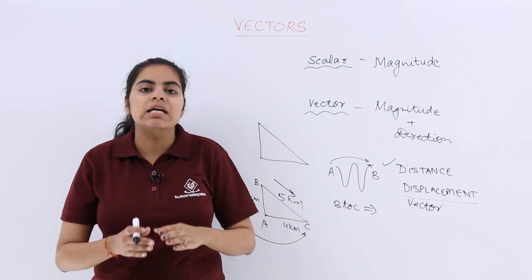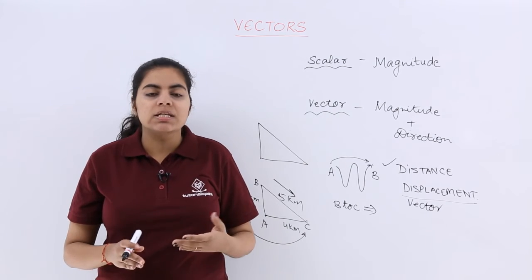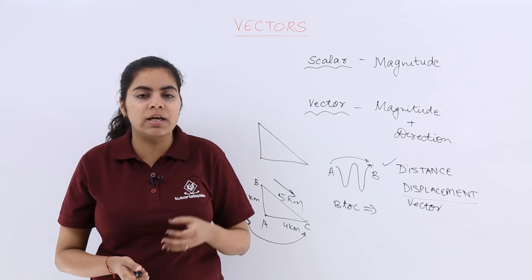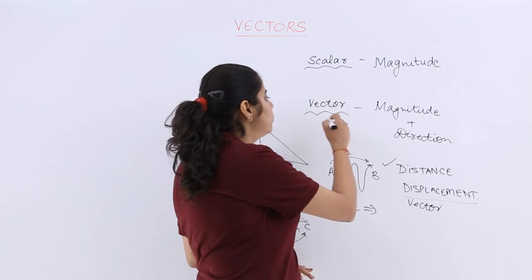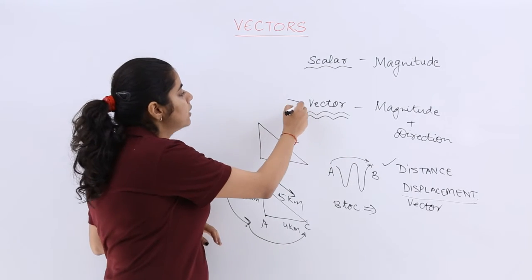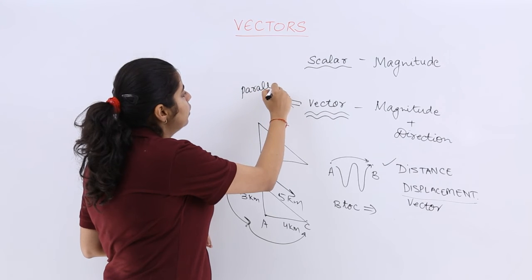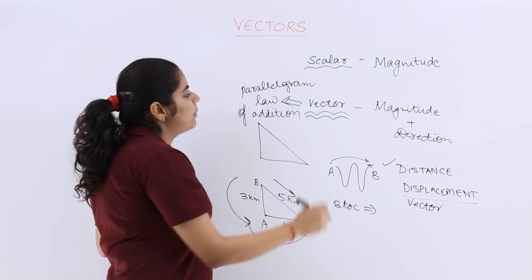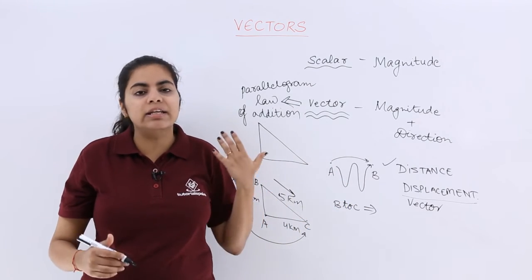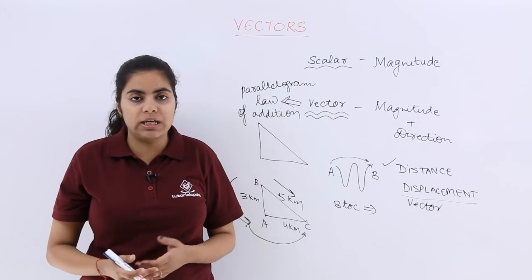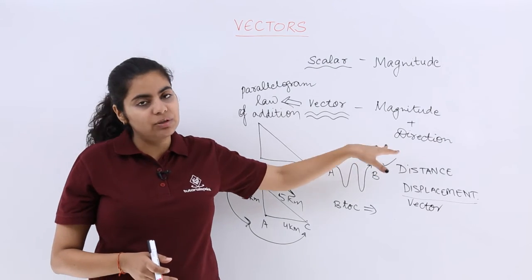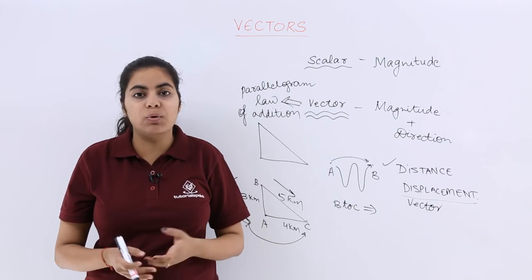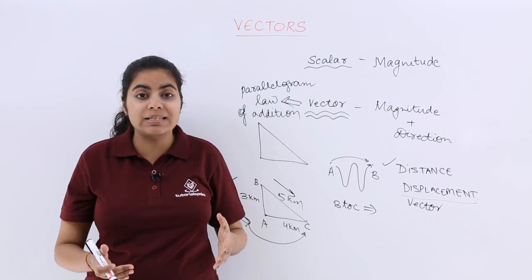One more important thing to remember: not all physical quantities that satisfy the definition of magnitude plus direction in space are necessarily vectors. There are some exceptions. A quantity must also follow the triangle law as well as the parallelogram law of addition to be termed a vector. We will take this up in class. So only those quantities are vectors which have magnitude, direction in space, and also follow the parallelogram law of addition. Now you have a brief understanding of what scalars and vectors are.